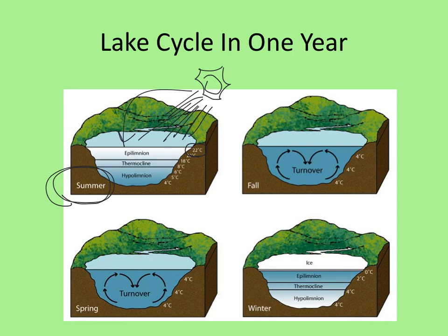We know that the densest water is four degrees Celsius, so notice that at the very bottom of the lake is the four-degree-Celsius water — it will always be at the bottom because it's the densest form of water. The temperatures get warmer as you go from the bottom up, and the water layers out in different bands of temperature. At the top we've got bands of warm temperature.